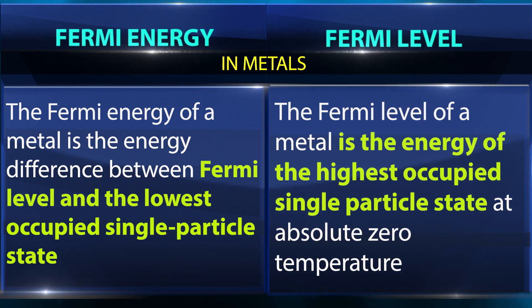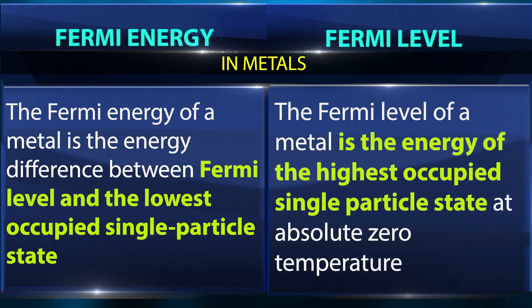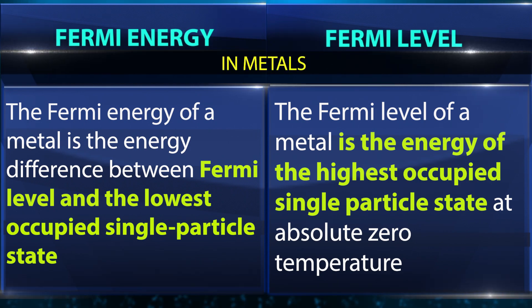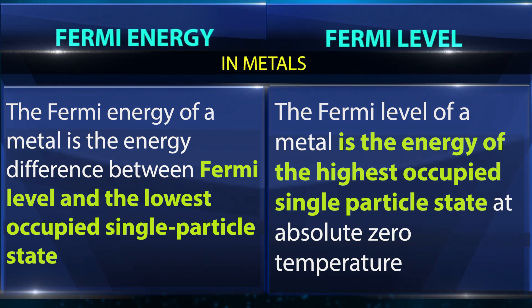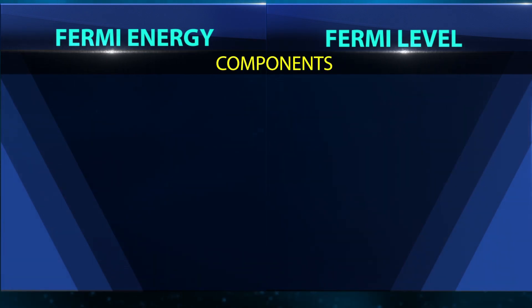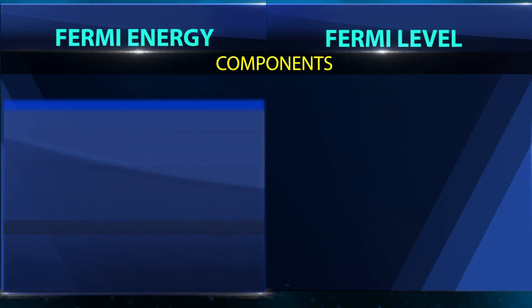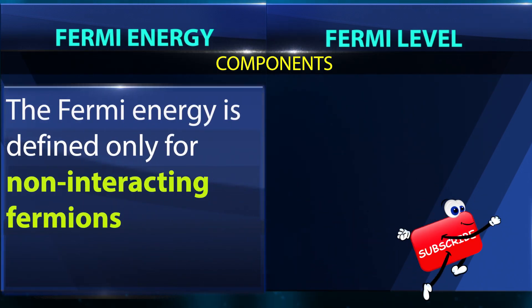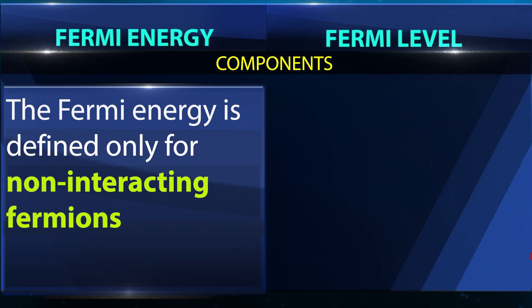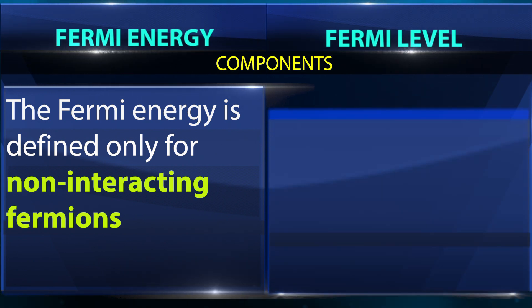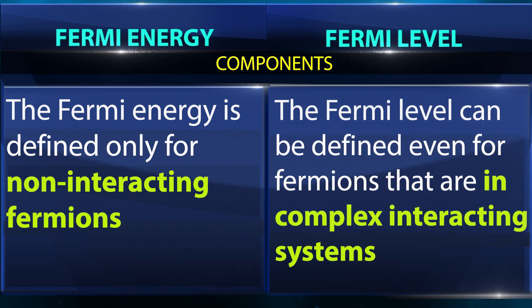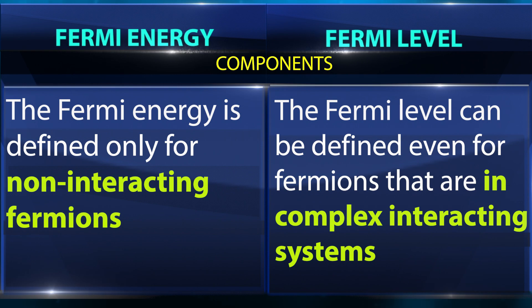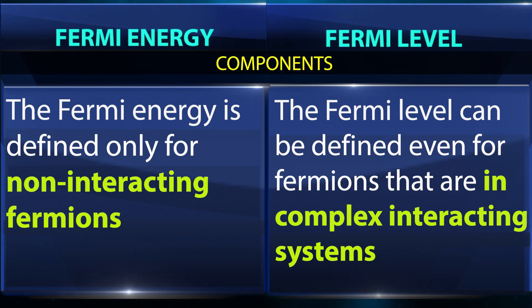In metals, the Fermi level is the energy of the highest occupied single particle state at absolute zero temperature. Regarding components, Fermi energy is defined only for non-interacting fermions, whereas Fermi level can be defined even for fermions that are in complex interacting systems.